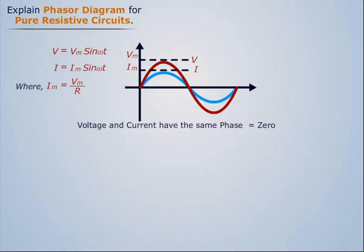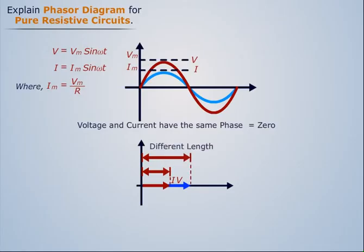Thus the Phasor Diagram for this Pure Resistive Circuit will be: here we see that the two phasors have different length and coincide with each other. Thus the phase difference between voltage and current is zero.